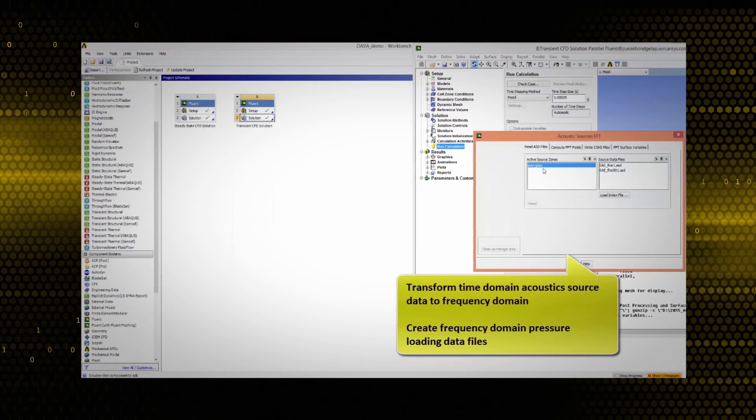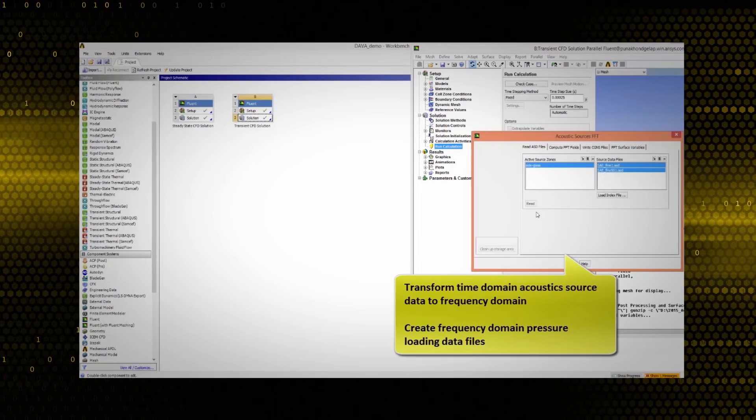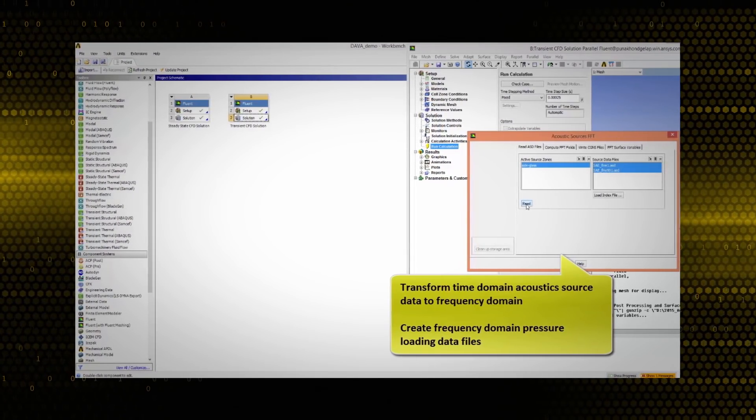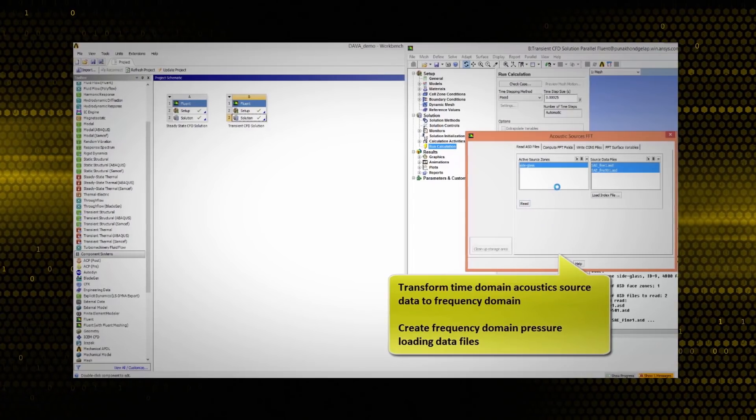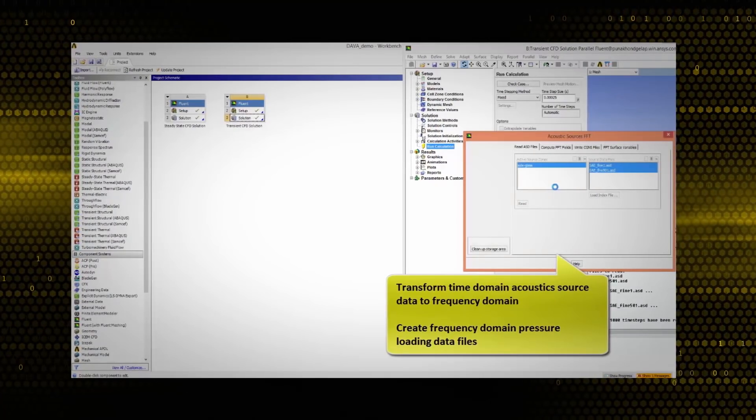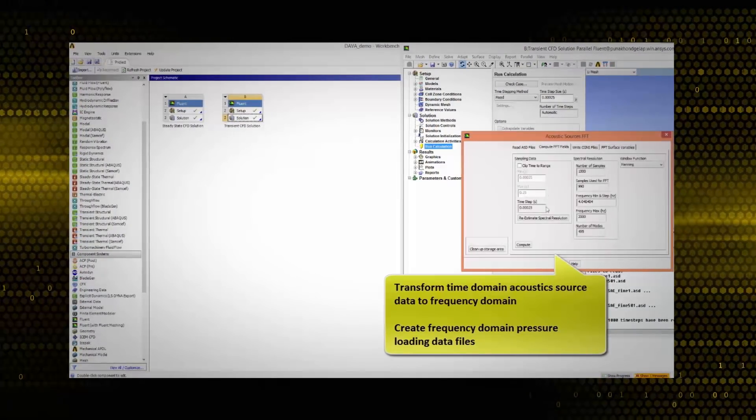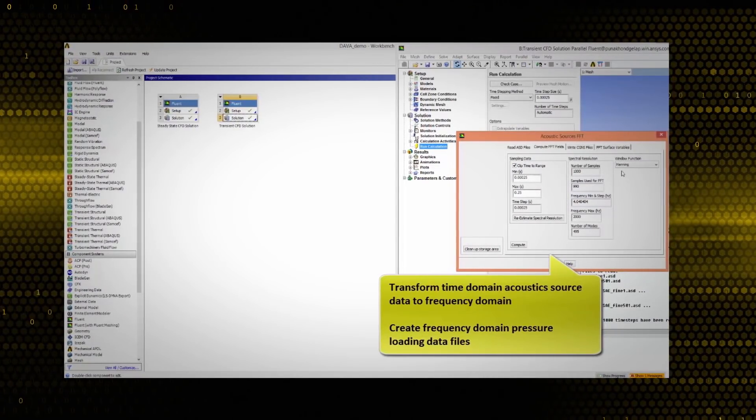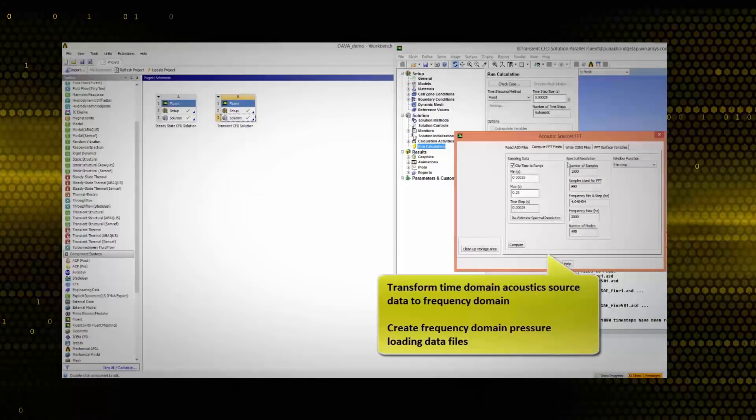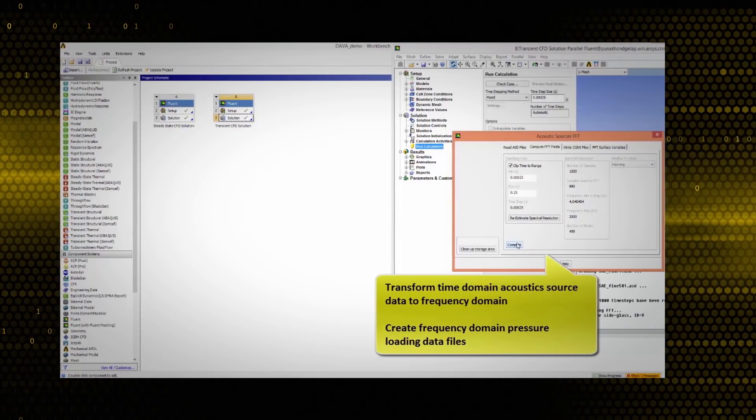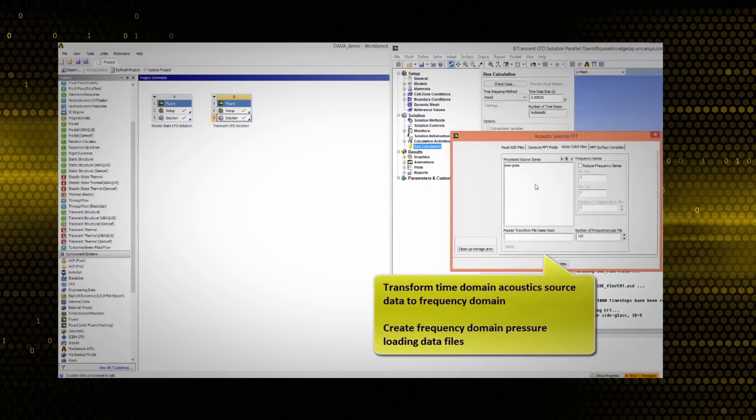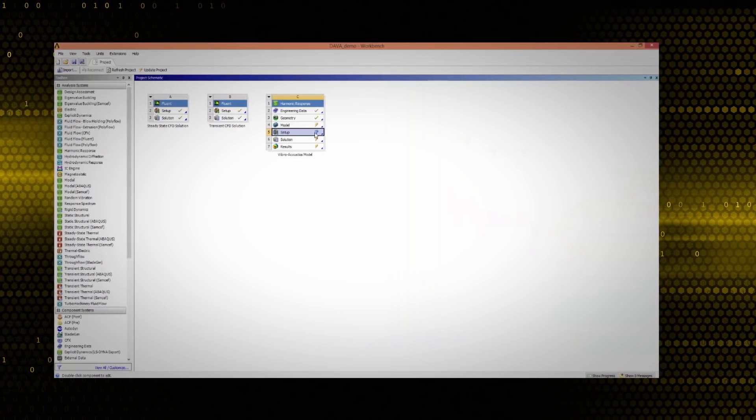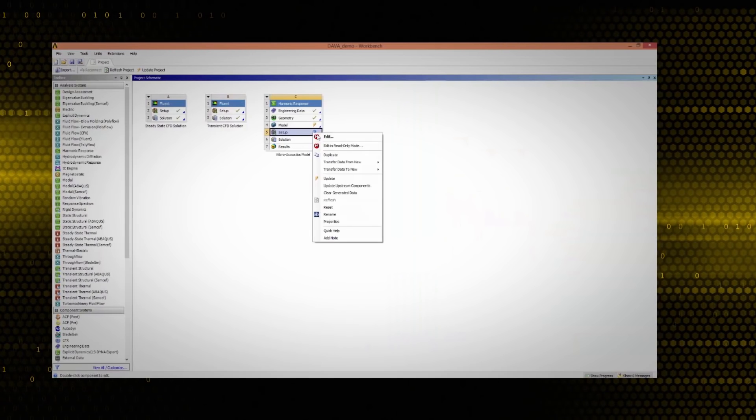Therefore, acoustic source data files, ASD, from the FFOWCS Williams and Hawking's Acoustics Module in Fluent will be processed by means of a Fast Fourier Transformation, FFT. The complex pressure is then exported in an open, public CGNS format. These files act as an input for a harmonic response simulation in ANSYS Mechanical. The frequency domain CFD pressure will be mapped on the surfaces of the auto body and act as external excitation.